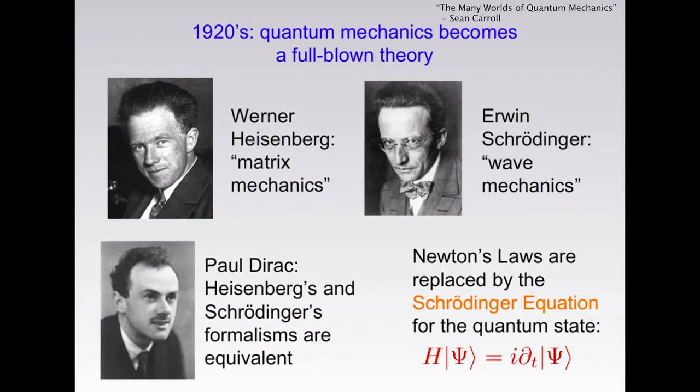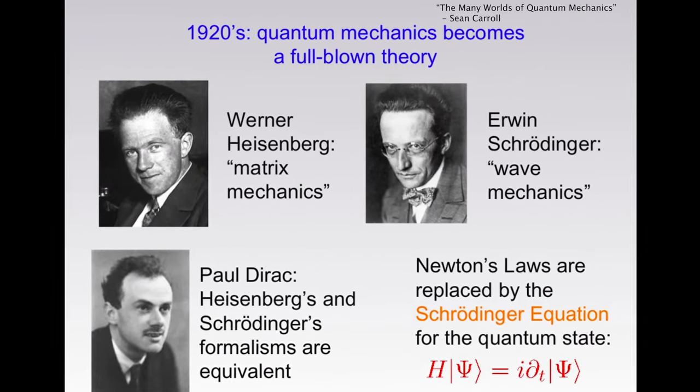Although quantum mechanics seems strange and new, this field of physics is over a hundred years old. The famous double slit experiment which helped start the snowball of quantum study was first observed in 1803. By the 1920s, modern quantum theories had started to be formalized.